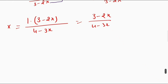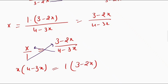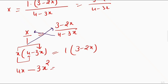So next step: x equals 3 minus 2x divided by 4 minus 3x. Now I will cross multiply. So I get x times 4 minus 3x equals 1 times 3 minus 2x. This x multiplies with 4 giving 4x, minus x times 3x giving 3x squared. Similarly multiplying by 1 gives 3 minus 2x.